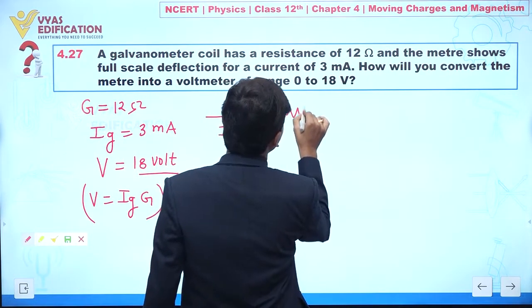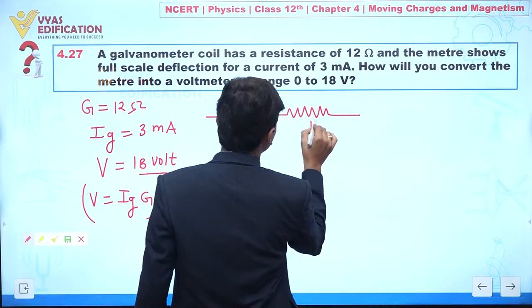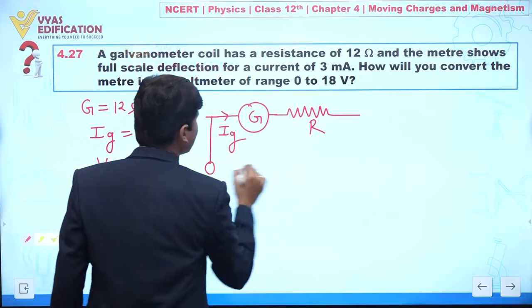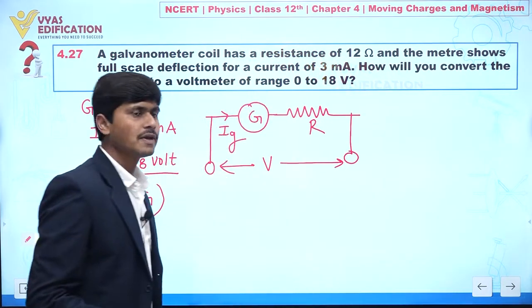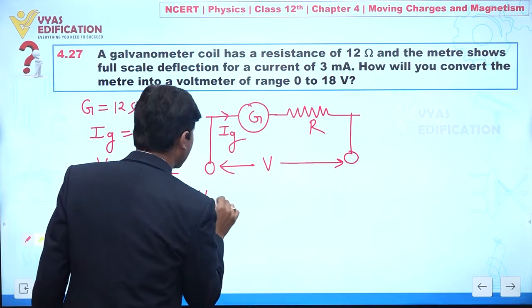Let's suppose we are now connecting here a very high resistance. If we are now measuring potential difference between these two ends, we are getting this as V.